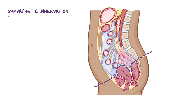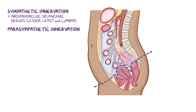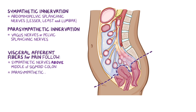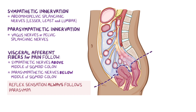Sympathetic innervation derives from the abdominopelvic splanchnic nerves, specifically the lesser splanchnic nerve, least splanchnic nerve, and lumbar splanchnic nerves, while the parasympathetic fibers derive from the vagus nerves or pelvic splanchnic nerves. Visceral afferent fibers transmitting pain from the large intestine follow sympathetic fibers above the middle of the sigmoid colon and parasympathetic fibers below the middle of the sigmoid colon. Reflex sensation always follows parasympathetic fibers.